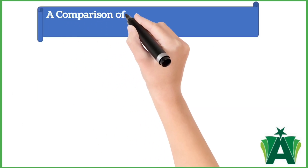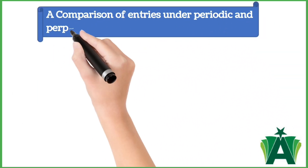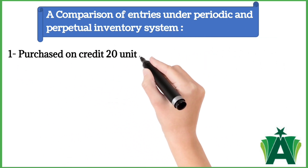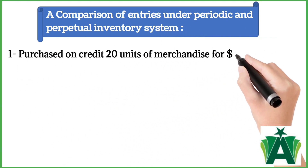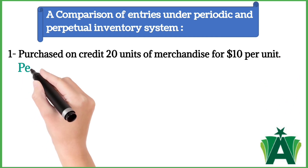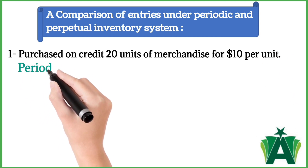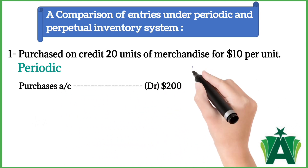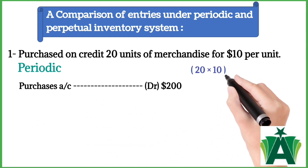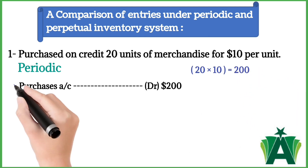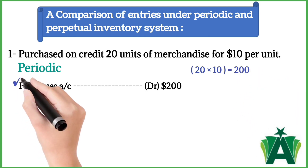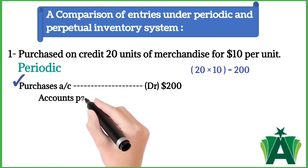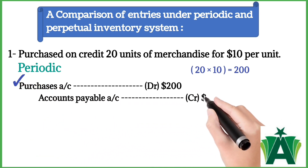A comparison of entries under periodic and perpetual inventory systems. Transaction 1: purchased on credit 20 units of merchandise for $10 per unit. Under the periodic system, the journal entry will be: Purchases account debit $200. $200 is the total cost of 20 units. The periodic system uses a Purchases account when merchandise is purchased. Accounts payable credit with the same amount.